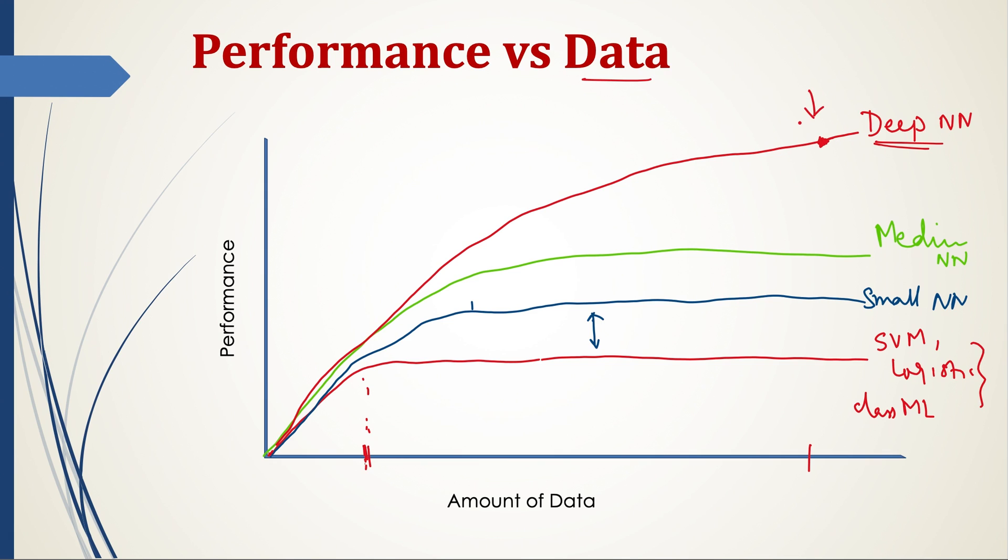You need to have a large amount of labeled data, and second, you need to have a very deep neural network. Data alone will not help you, and also deep neural network alone cannot help. The deeper your network is, it will need more and more data in order to have high performance.